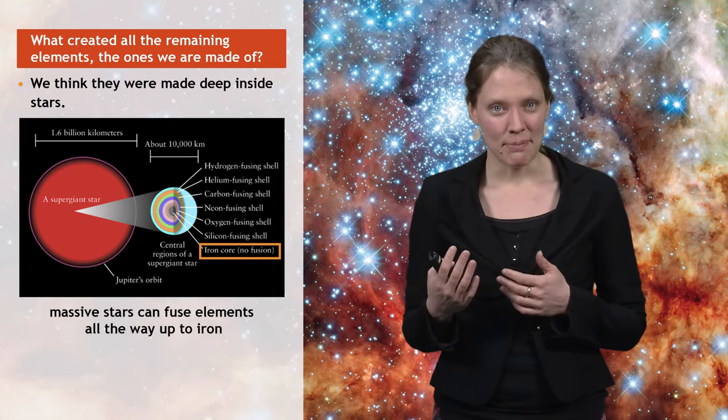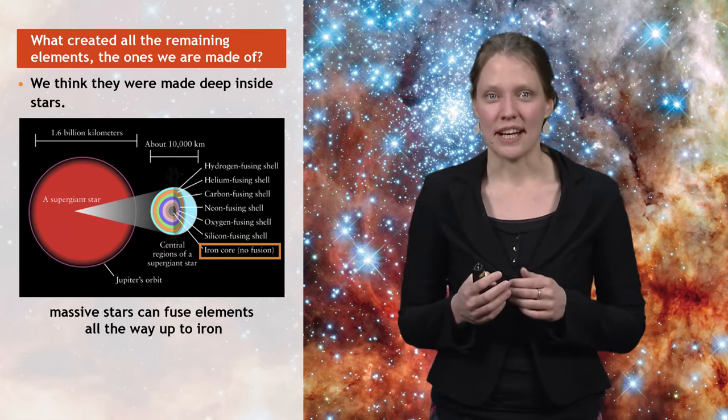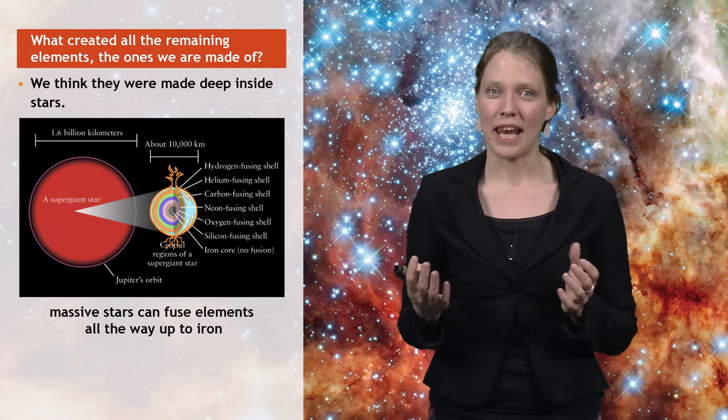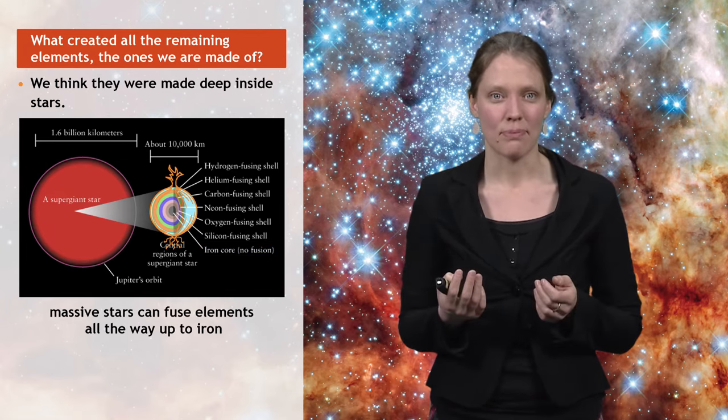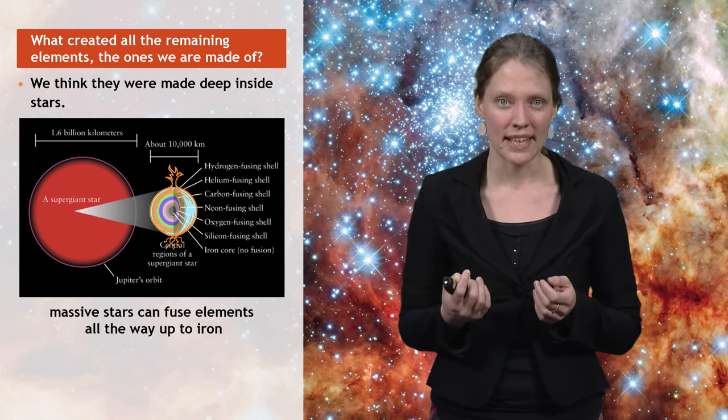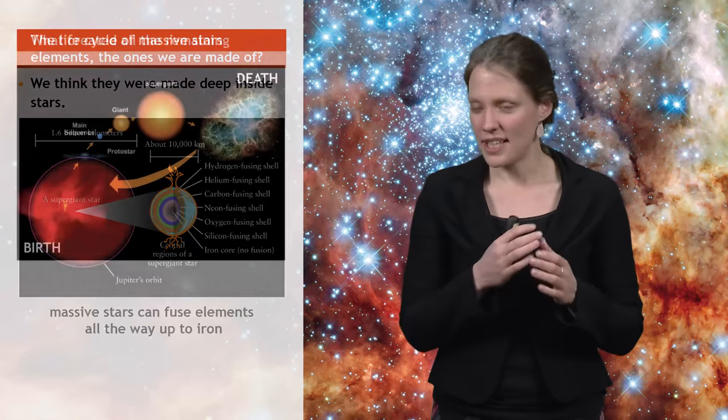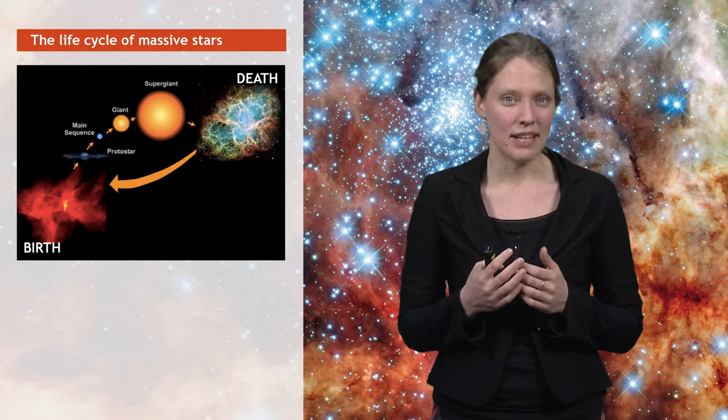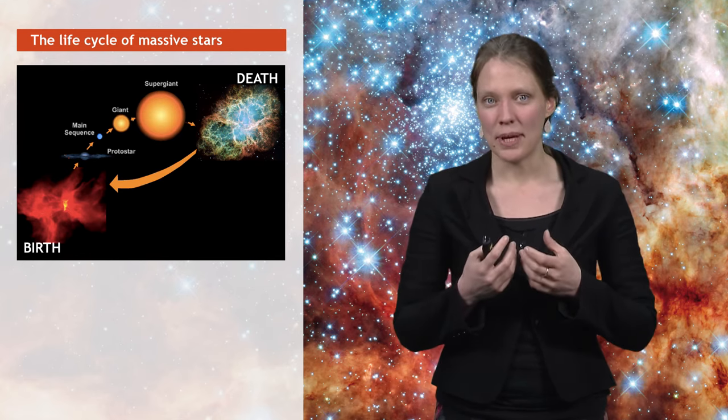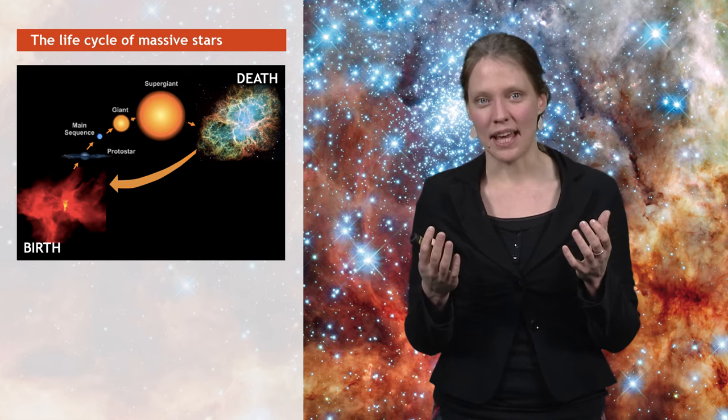At the end of their lives, their deep interior looks like a set of onion shells, with different layers of all the elements that they produce during their life. Finally, the star explodes. This explosion is so powerful that even more elements are made. And some of these elements will be ejected into the surrounding gas clouds.